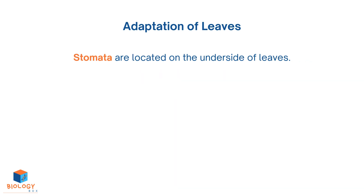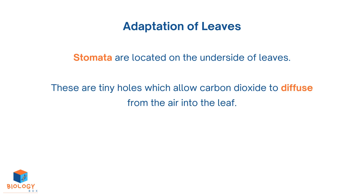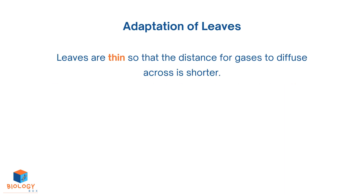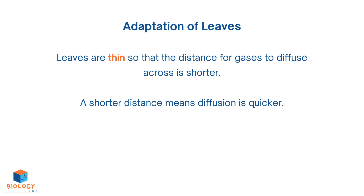Stomata are located on the underside of leaves. These are tiny holes which allow carbon dioxide to diffuse from the air into the leaf, and allow oxygen to diffuse out of the leaf into the air. Leaves are thin so that the distance for gases to diffuse across is shorter. A shorter distance means diffusion is quicker.